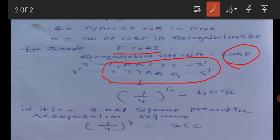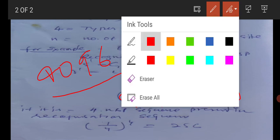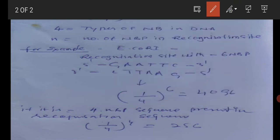So then the same formula you can apply: 1/4^n. So n means six. If you will keep the value of n equal to six, then you will get 4096 recognition sequences.